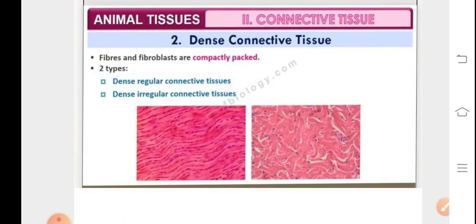The dense connective tissue consists of fibers and fibroblasts which are compactly packed. They are basically divided into two types: the dense regular connective tissue and the dense irregular connective tissue.